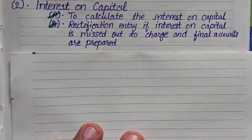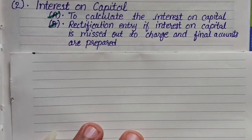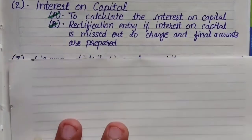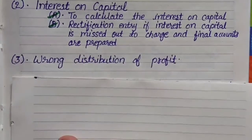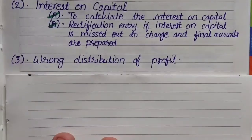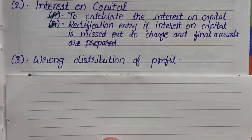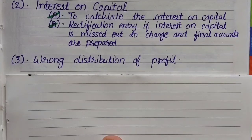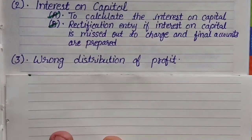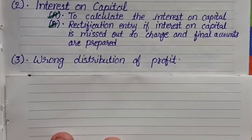The second method is Interest on Capital. Here also you will see two similar types: first, to calculate Interest on Capital, and second, a Rectification Entry if Interest on Capital is missed out to charge and Final Accounts are prepared. So the same two methods we saw for Drawings will also be seen for Interest on Capital. The third method is Wrong Distribution of Profit and Loss — sometimes the profit ratio is different and we mistakenly divide it in another ratio, so a rectification entry sum to correct that.